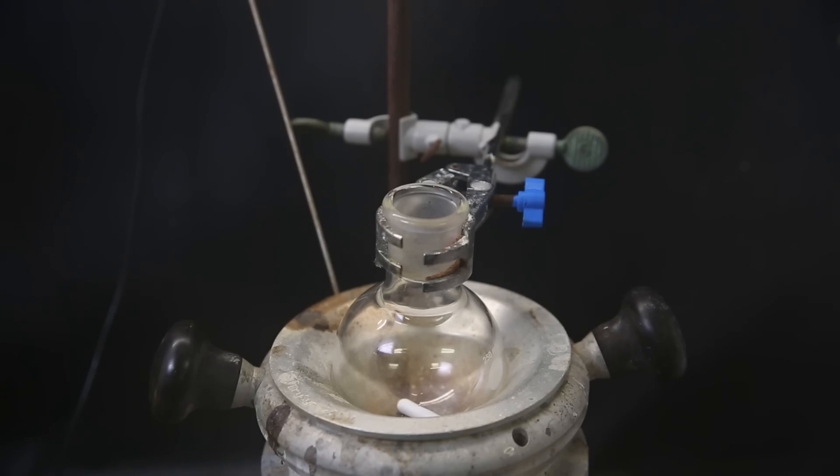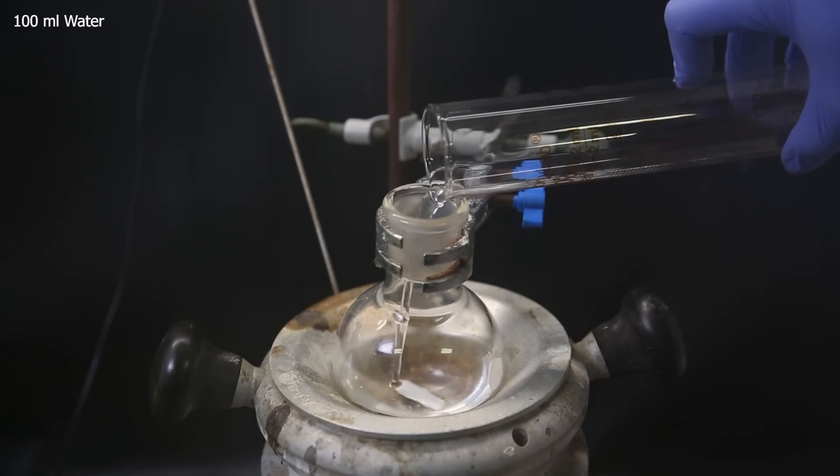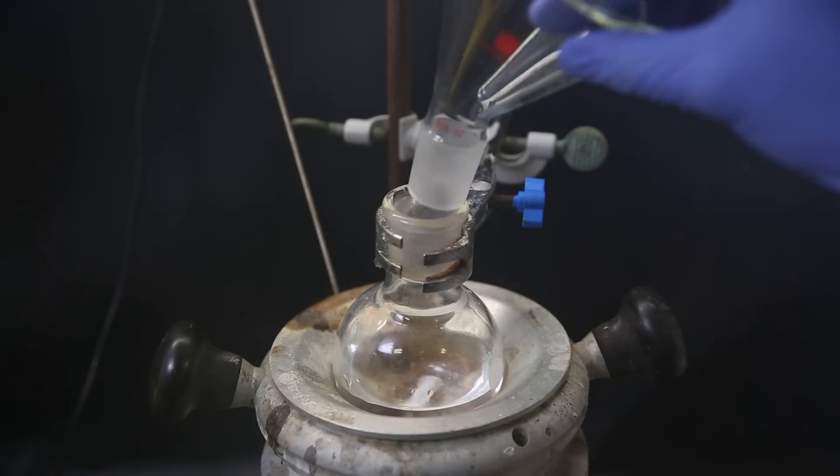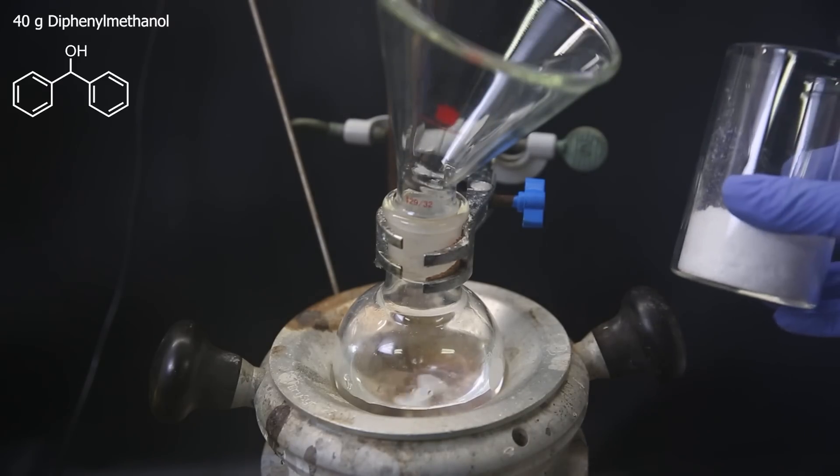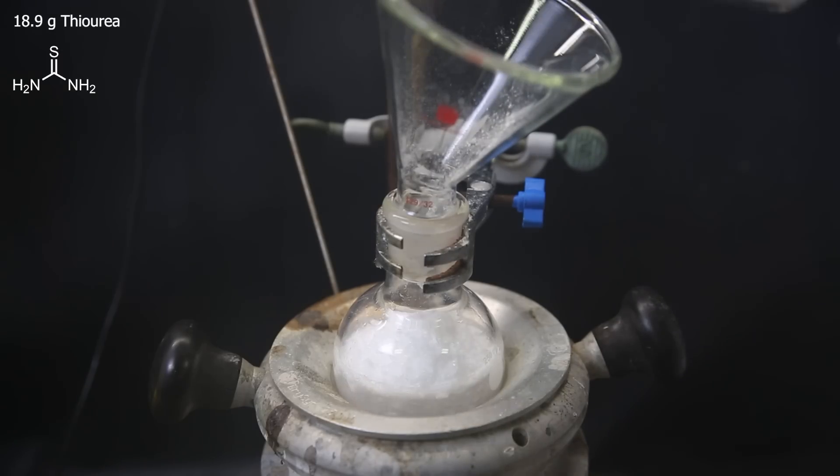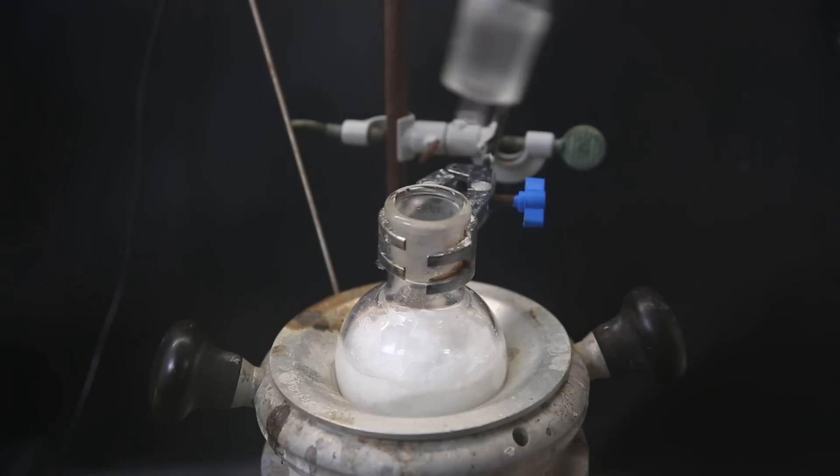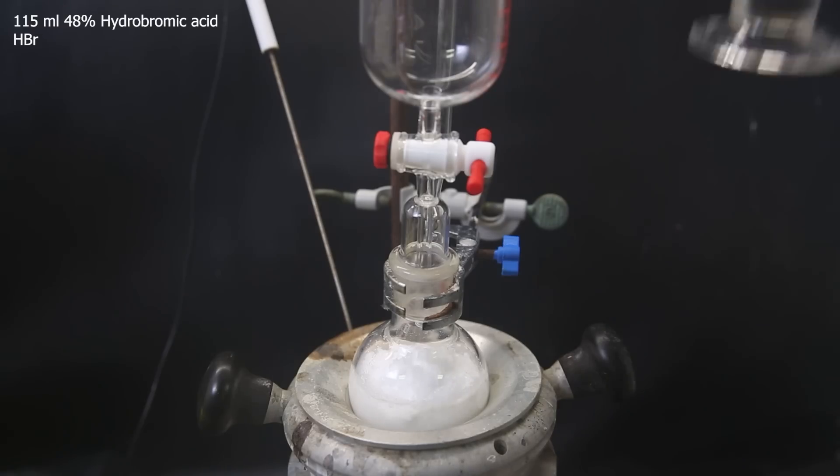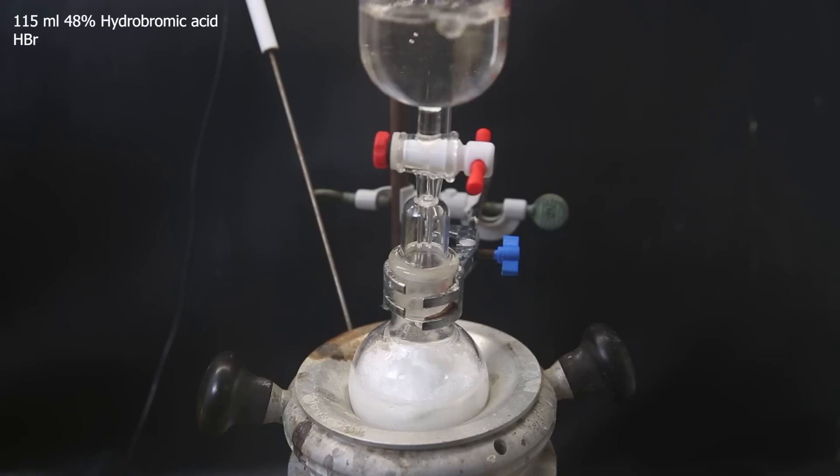So to get started, I set up a flask with a stir bar in a heating block and add in 100 ml of water as a solvent. I then attach a funnel and pour in 40 g of the reagent diphenylmethanol. On top of that, I add 18.9 g of the reagent thiourea. I attach a dropping funnel and into that I add 115 ml of 48% hydrobromic acid. I kinda brain farted with the flask size here and it's a little too small, but it might only just fit all together in the end.